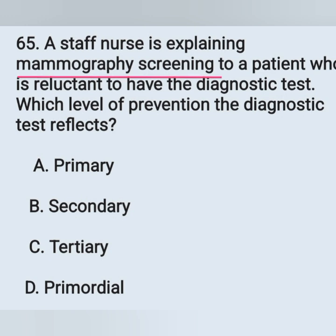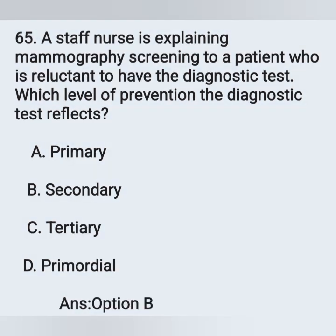Question 65: A staff nurse is explaining mammography screening to a patient who is reluctant to have the diagnostic test. Which level of prevention does this reflect? Option A: Primary prevention, Option B: Secondary prevention, Option C: Tertiary prevention, Option D: Primordial prevention. This reflects secondary prevention — Option B is the correct answer. Early diagnosis, case detection, and screening all come under secondary prevention.